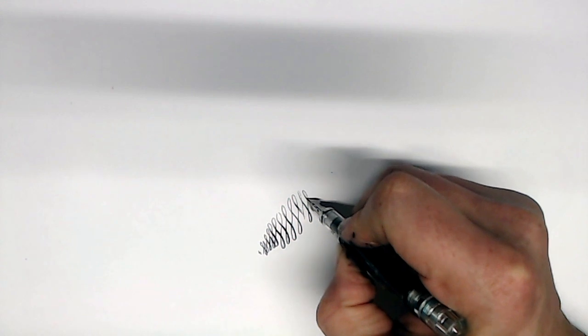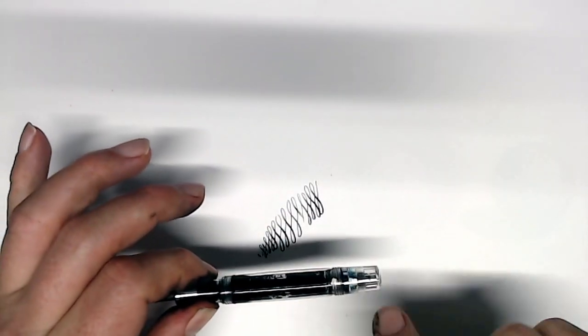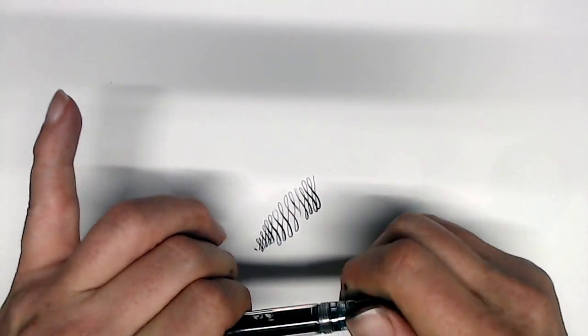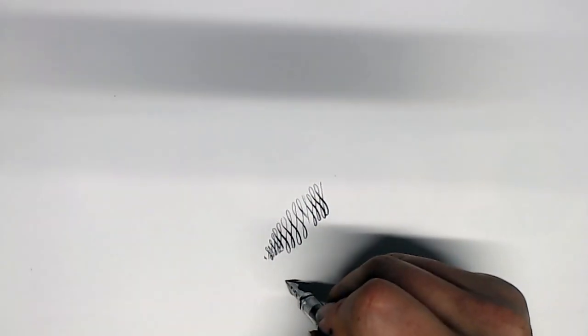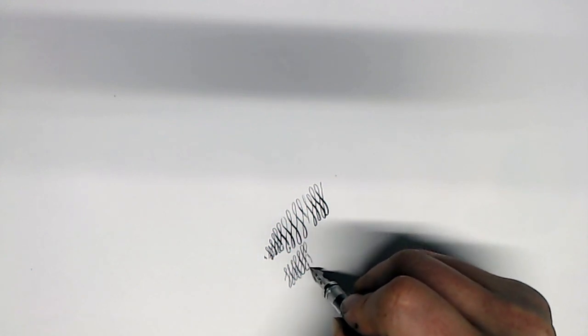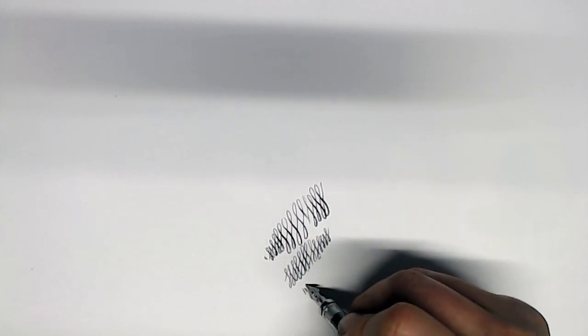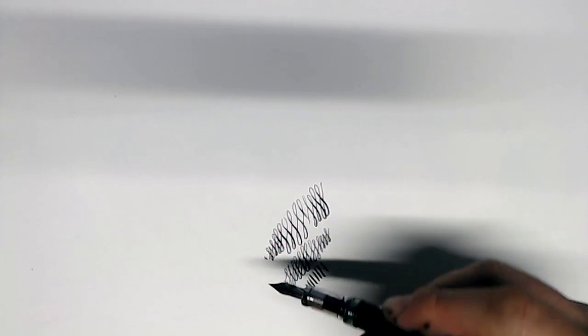This Twsbi mini vac is one of my favorite pen bodies from Twsbi. First of all, it's a vac filler. It has huge ink capacity. Opening the valve, this is a dual shutoff valve, increases the ink flow, which gives you a little bit of a wider writing experience, better for flex.